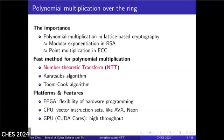Polynomial multiplication is the core computational burden in lattice-based cryptography, playing a role as critical as modular exponentiation in RSA and point multiplication in ECC. To accelerate polynomial multiplication, three primary methods are commonly used: the number theoretic transform, the Karatsuba algorithm, and the Tom-Cook algorithm. NTT is preferred due to its lower computational complexity. Cryptographic implementations vary significantly across different platforms, each with distinct characteristics — for example, GPUs with their CUDA cores provide the highest throughput for computation.